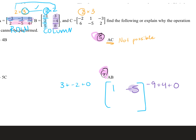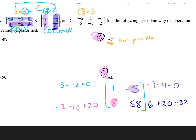For the second row, first column: two times negative one is negative two, negative five times two is negative ten, four times five is twenty — so negative two minus ten plus twenty equals eight. For the second row, second column: six plus twenty plus thirty-two equals fifty-eight. So the resulting two-by-two matrix is: one, negative five, eight, fifty-eight.